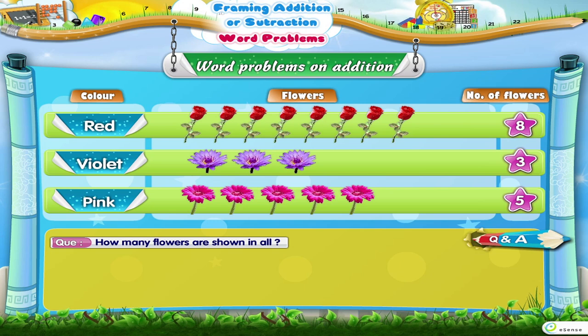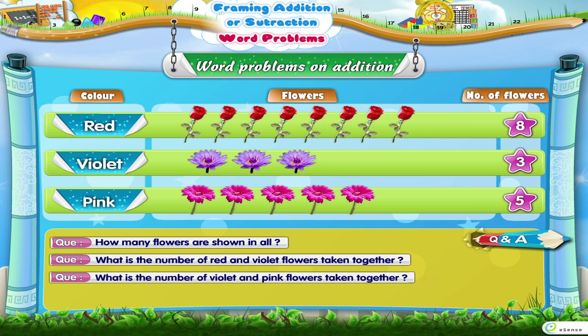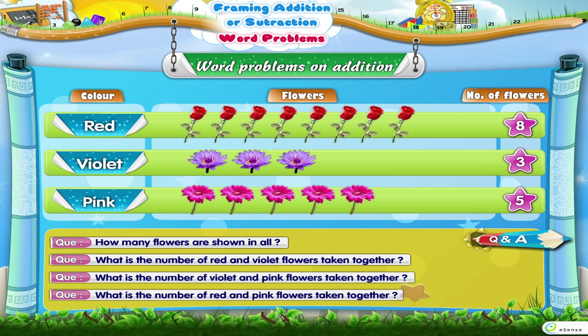How many flowers are shown in all? What is the number of red and violet flowers taken together? What is the number of violet and pink flowers taken together? What is the number of red and pink flowers taken together?